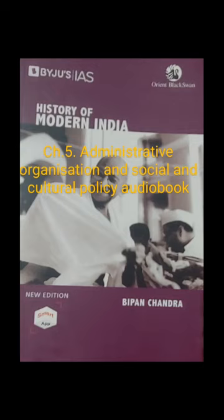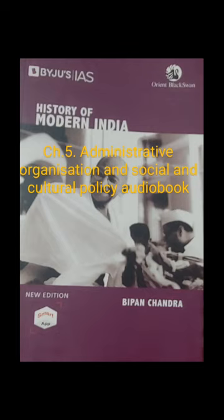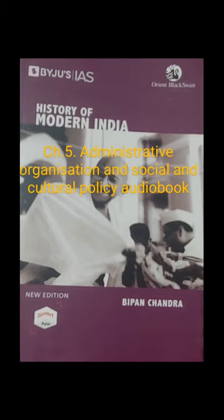The third pillar of British rule was the police, whose creator was once again Cornwallis. He relieved the zamindars of their police functions and established a regular police force to maintain law and order. In this respect he went back to and modernized the old Indian system of thanas, putting India ahead of Britain where the system of police had not yet developed. Cornwallis established a system of circles or thanas headed by a daroga, who was an Indian. Later, the post of District Superintendent of Police was created to head the police organization in each district. Once again, Indians were excluded from all superior posts. In the villages, the duties of the police continued to be performed by village watchmen maintained by the villagers. The police gradually succeeded in reducing major crime such as dacoity. The police also prevented the organization of large-scale conspiracies against foreign control.